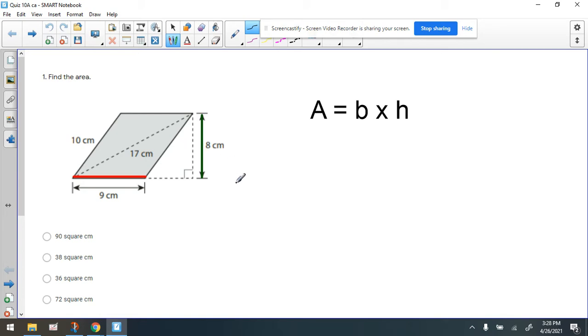Alright, so whenever we find the area of a parallelogram, we use this formula: Area equals base times height. And what's tricky about this question, they give a lot of numbers intended to confuse you. But we're not going to let that happen to us because we're just going to remember that we have to find the two numbers that are perpendicular to each other and use those.